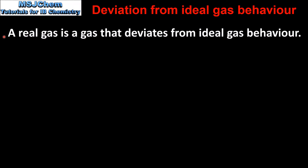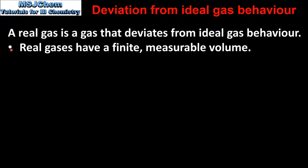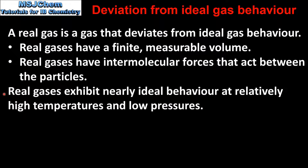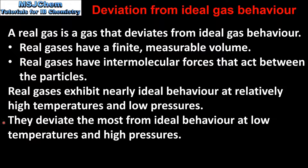A real gas is a gas that deviates from ideal gas behavior. For example, real gases have a finite, measurable volume. They also have intermolecular forces that act between the particles. Real gases exhibit nearly ideal behavior at relatively high temperatures and low pressures. They deviate the most from ideal behavior at low temperatures and high pressures.